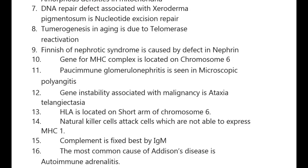Finnish type of nephrotic syndrome is caused by defective nephrin gene. MHC complex is located on chromosome 6. Pauci-immune glomerulonephritis is seen in microscopic polyangiitis. HLA is located on the short arm of chromosome 6.